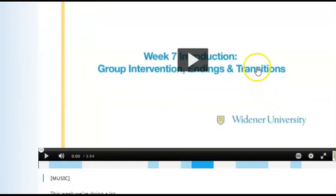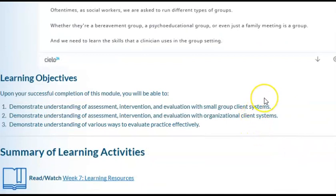First, you will see an overview video on group intervention, endings, and transitions. Our learning objectives: upon your successful completion of this module, you will be able to demonstrate understanding of assessment, intervention, and evaluation with organizational client systems, and demonstrate understanding of various ways to evaluate practice effectively.